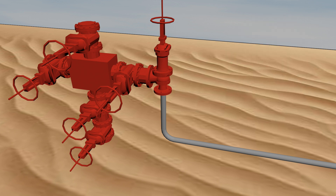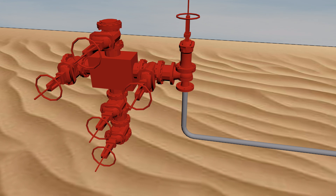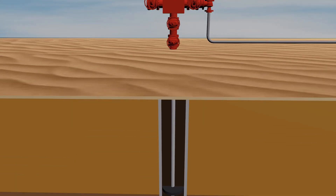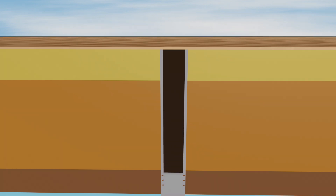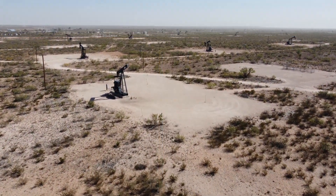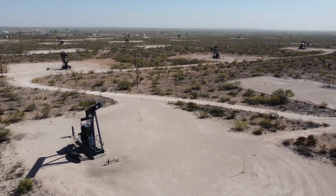Eventually, every well reaches the end of its productive life, and the final phase begins. This phase is called P&A, which is short for Plug and Abandon. It involves safely shutting down the well, removing equipment, and restoring the site to its natural state. The well is plugged with cement to prevent any leaks between different zones or leaks to the external environment. And that's a wrap on the life cycle of an oil and gas well, from exploration to P&A.